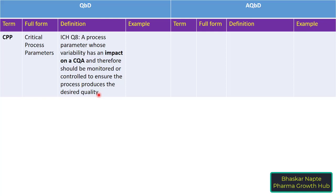Examples of critical process parameters include granulation time. The granulation time can influence the quality of granules produced at the end of the wet granulation process, and can certainly influence dissolution. Similarly, blending time can influence the content uniformity of the blend. These are examples of critical process parameters.